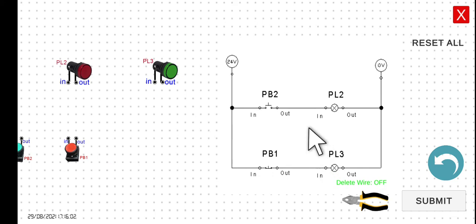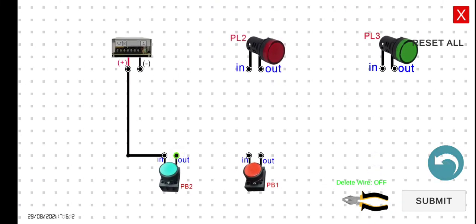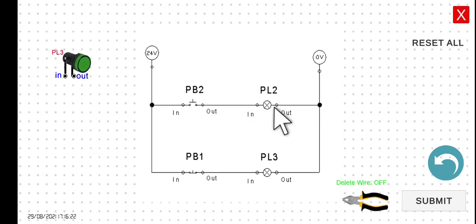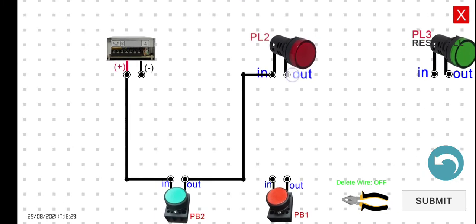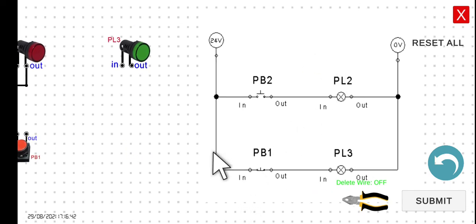Next, connect the output of PB2 to the input of PL2. Then connect the output of PL2 to the negative terminal. Next, connect the input of PB1 to the 24 volts — in this type of circuit we can also connect the input of PB1 to the input of PB2.